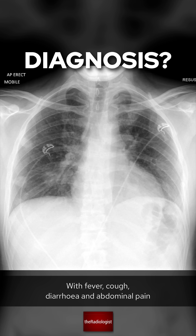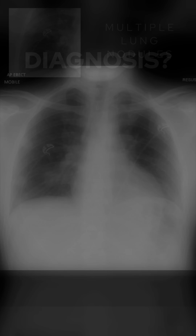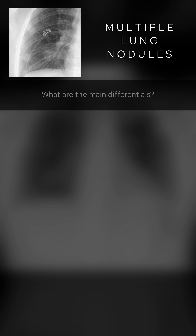Here we have a young patient who is having an AP film in ED resus, so we know they are likely to be sick. We can see several nodules within the right lung, mainly within the middle and lower zones. Some of these are quite peripheral. With multiple lung nodules and an unwell young male, what are the main differentials?